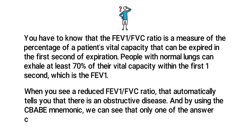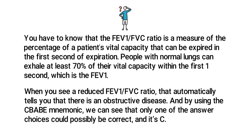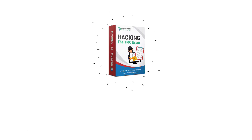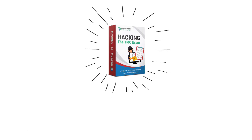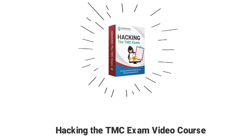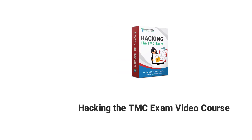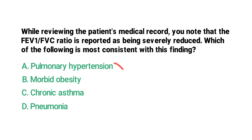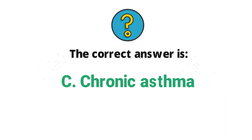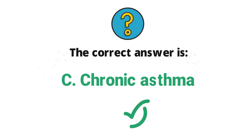By using the CBABE mnemonic, we can see that only one of the answer choices could possibly be correct, and it's C. We dive deeper into CBABE and the obstructive diseases inside of our Hacking the TMC Exam video course — definitely check it out if you're interested. For this question, there is only one obstructive disease listed, so we know that the correct answer is C, chronic asthma.